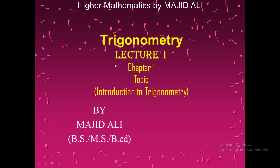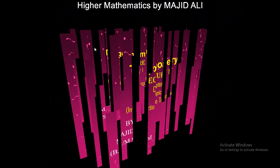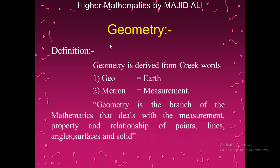Before starting trigonometry, we first look at geometry. Geometry is derived from two Greek words: 'geo' and 'metron'. 'Geo' means earth and 'metron' means measurement. In one sentence, geometry is the branch of mathematics that deals with the measurements, properties, and relationships of points, lines, angles, surfaces, and solids.